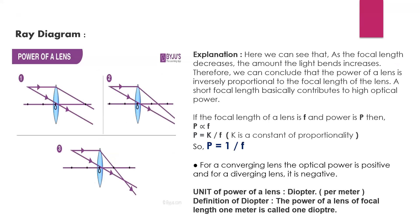Here is a few ray diagrams and the explanation. We can see that as the focal length decreases, the amount of light bending increases. Therefore, we can conclude that the power of the lens is inversely proportional to the focal length of the lens. So if a lens has less focal length, then its power will be higher. The teacher noted: in the slide it says directly proportional, but the correct statement is inversely proportional — others should note that correction.